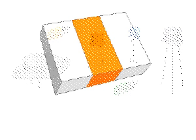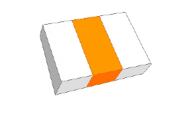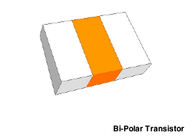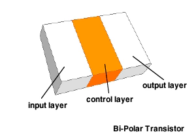There are many kinds of transistors. Typical is the bipolar, which has three layers: an input layer, a control layer, and an output layer.